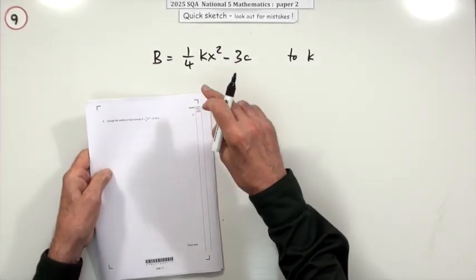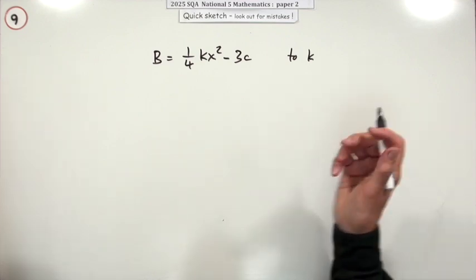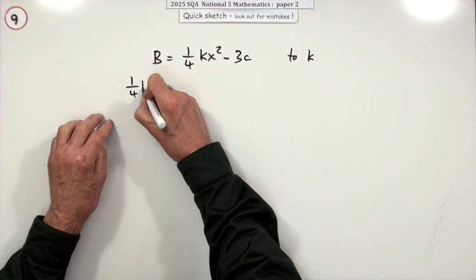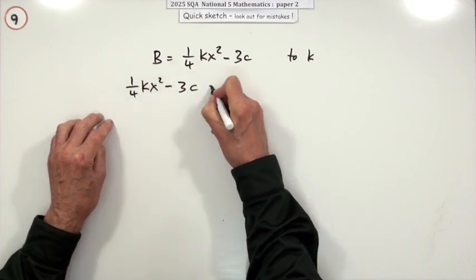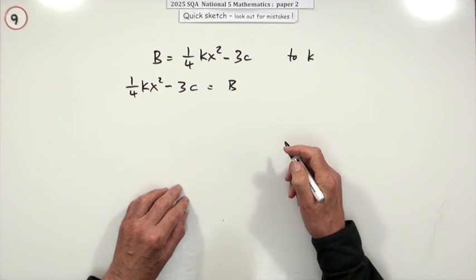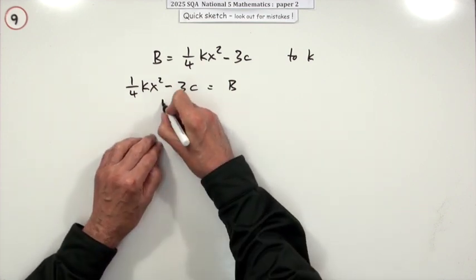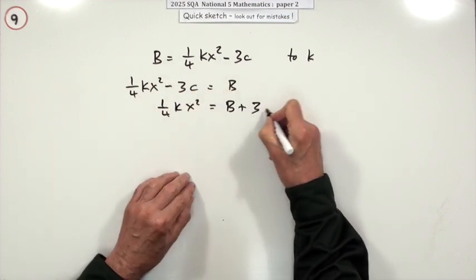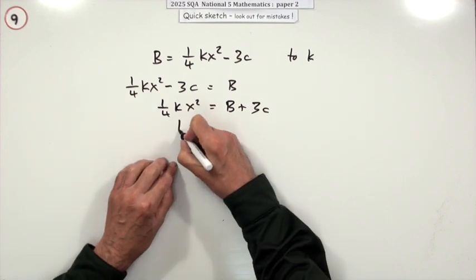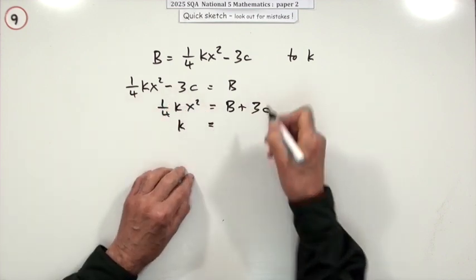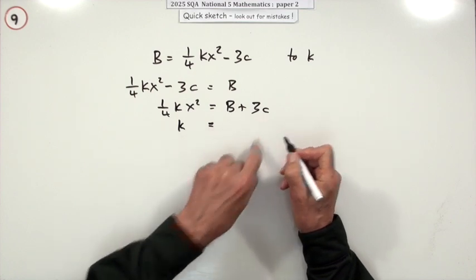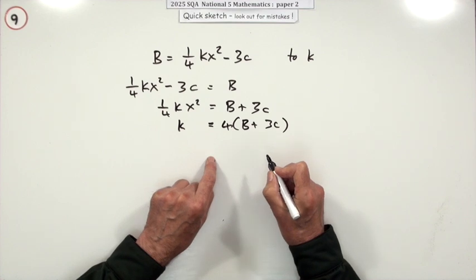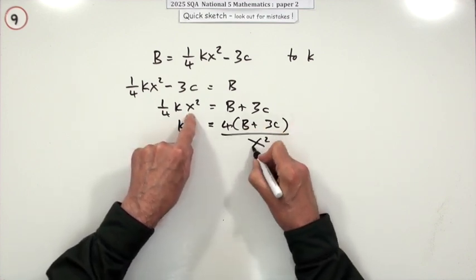And then in number 9, three marks, change the subject of this formula to K. Well that just means get K at the front on its own. Well first of all get it in the right place. So I'm just going to swap them over. Just looking at it the other way around. Right, get rid of the bits and pieces. So this separate term here, a quarter K X squared can come across and add on. Now the two parts here, the dividing part and the multiplying part can go across and do the opposite. So the four can go across and multiply all of it. So put them in a bracket as they're both going to get operated on. And that X squared can come across and divide. And then you're done.